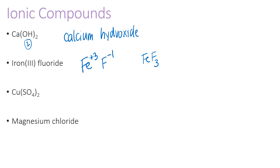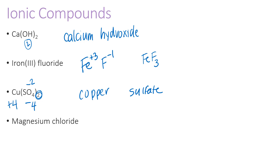Next we have CuSO₄. We have copper, sulfur, and oxygen — a strong hint that a polyatomic ion is involved. Cu is copper, and copper is a transition metal that can have multiple charges, so I don't know its charge right away. SO₄ is sulfate, and the charge on sulfate is always minus two. Here we have two sulfates, so the total negative charge is minus four. That means the positive charge on the copper must be plus four, which we write as a Roman numeral.